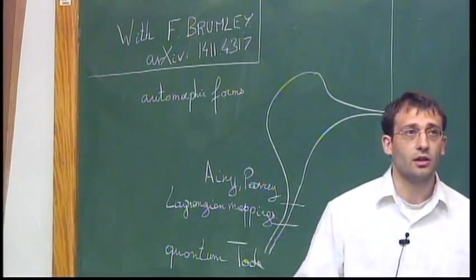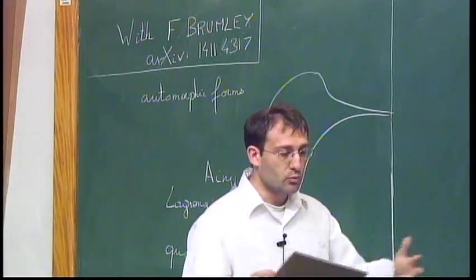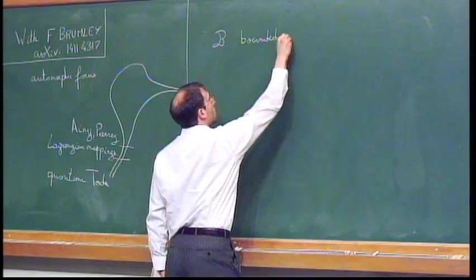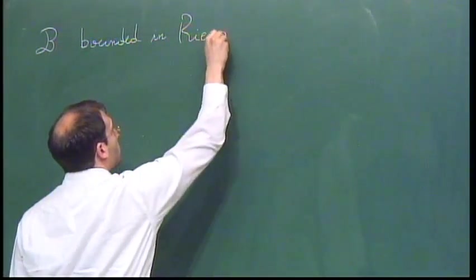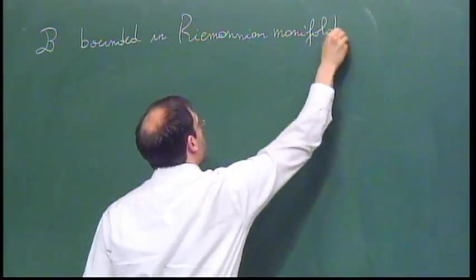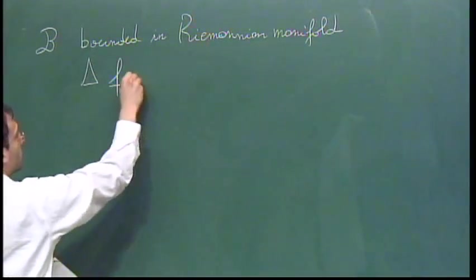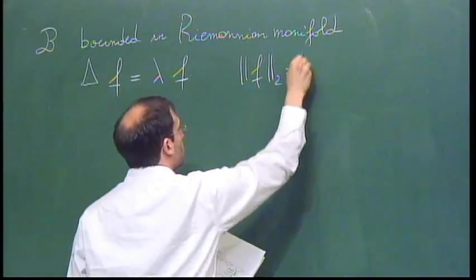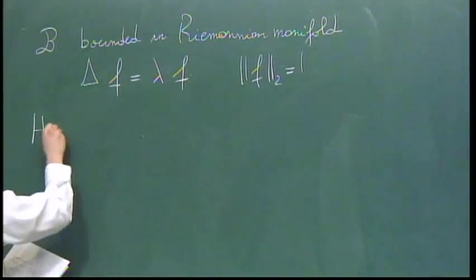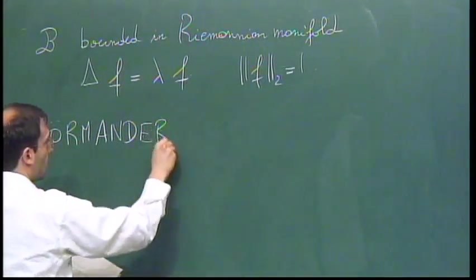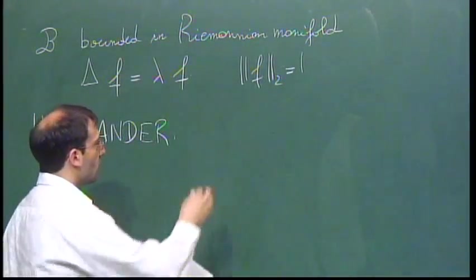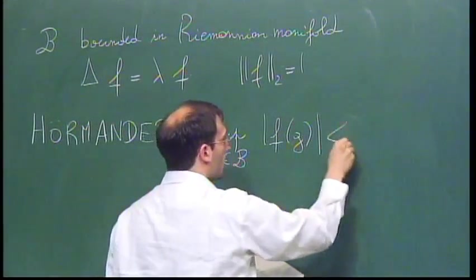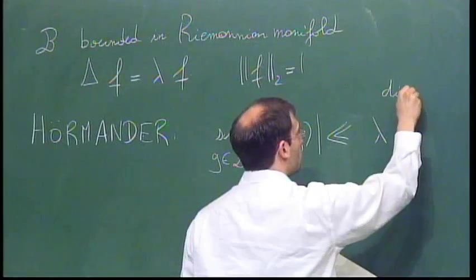So first, let me start from a very general framework. And in this generality, in fact, there is a result by Hörmander, which I will recall first, that if B is a bounded set in any Riemannian manifold, and you have a Laplace eigenfunction on it, I will always normalize it to be L2. Then Hörmander proved, in fact in even greater generality, but that's in general for my purpose here, that the supremum on B of F is less than the eigenvalue to the dimension minus 1 over 4.